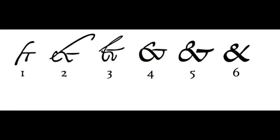What about the ampersand? It has a scribal beginning — it's short for et in Latin, which means and. As you can see from the diagram, that et got more and more fancy until it became this incredibly beautiful symbol. But it's really difficult to draw yourself — most people just use a plus sign.